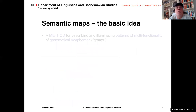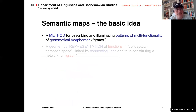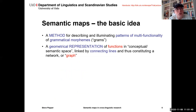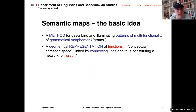The basic idea of semantic maps is that it's both a method for describing and illuminating patterns of multifunctionality of grammatical morphemes — which we will call grams — and a geometrical representation of functions in conceptual space linked by connecting lines, thus constituting a network or graph. 'To' is an example of a gram.